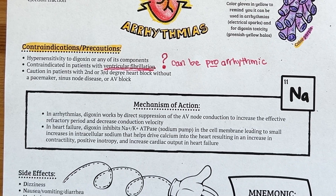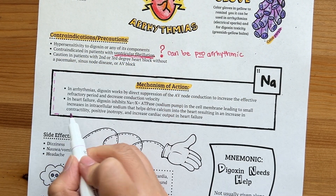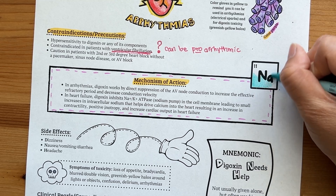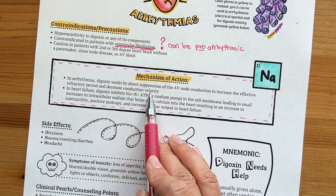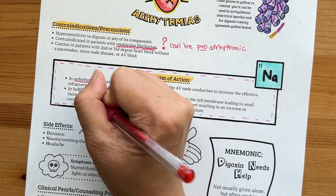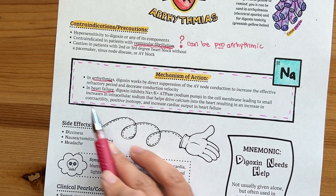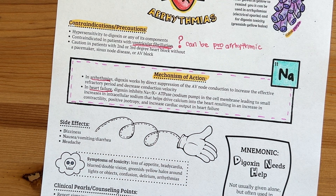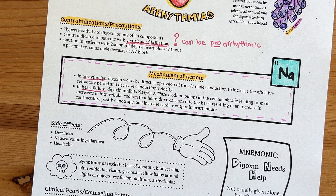Let's look at digoxin's mechanism of action in arrhythmias versus heart failure. In arrhythmias, digoxin works by direct suppression of the AV node — the gatekeeper between the atria and the ventricles — slowing electrical conduction by increasing the effective refractory period and decreasing the heart rate. In heart failure, digoxin works by inhibiting the sodium-potassium ATPase, or sodium pump, in the cardiac cell membrane, leading to small increases in intracellular sodium that help drive calcium into the heart, resulting in positive inotropy and increased cardiac output. In simple terms, digoxin increases the force of each heartbeat while decreasing the heart rate to allow more time for the ventricles to fill.